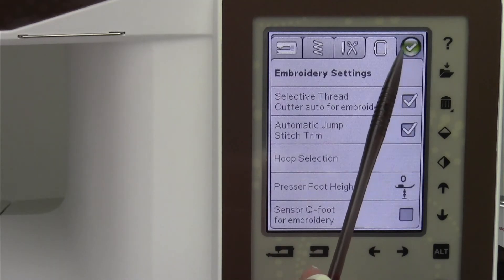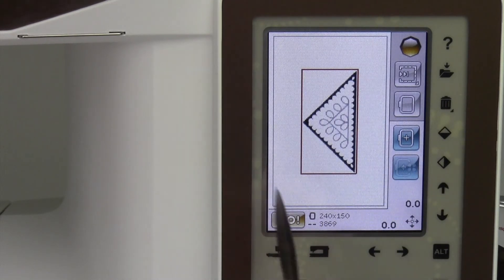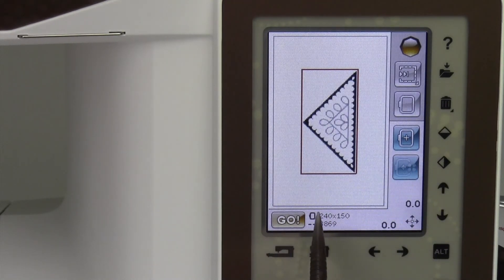I'm going to just go ahead and uncheck these throughout our embroidery, if there's anything else I can show you that will come up. Right now, we're just set up for the 240 by 150 hoop, and we'd be ready to start embroidering.